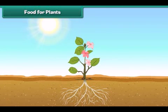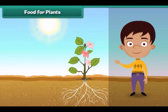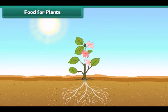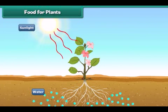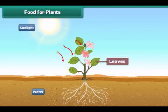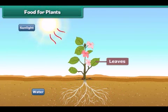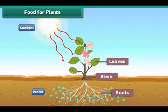Plants make their own food with the help of sunlight. Plants take water from the soil and prepare food in their leaves. The plant takes up some part of the food and the rest is stored in its roots, stem, leaves and seeds.